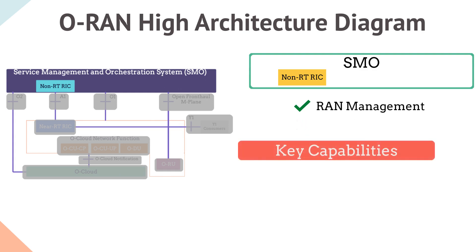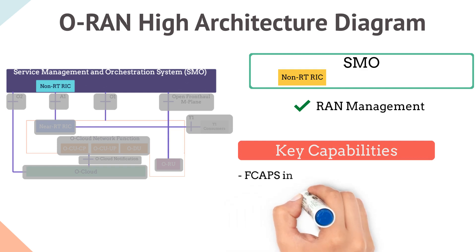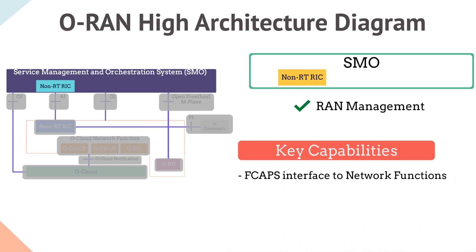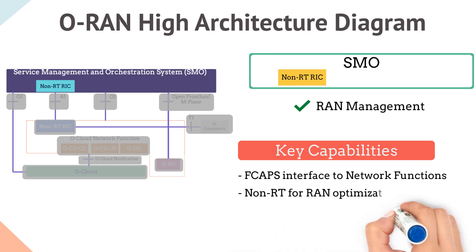Now let's discuss the key capabilities of the SMO for RAN domain. It starts with the FCAPS interface to ORAN network functions, taking care of fault, performance, configuration and security of open RAN network functions. Next is non-RT RIC for RAN optimization, a major uplift of legacy self-organizing network where RAN optimization algorithms from different vendors